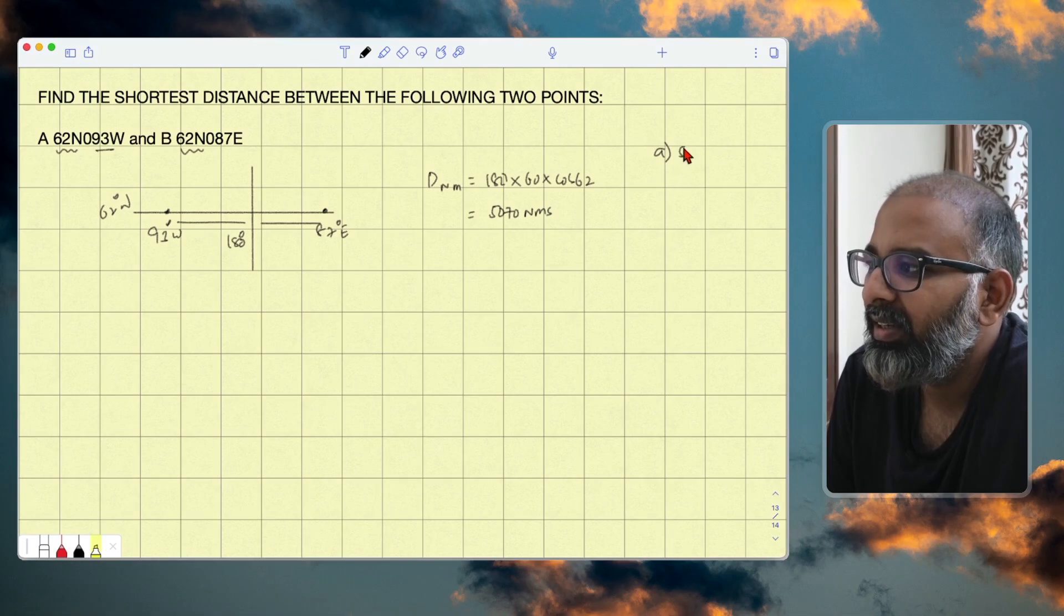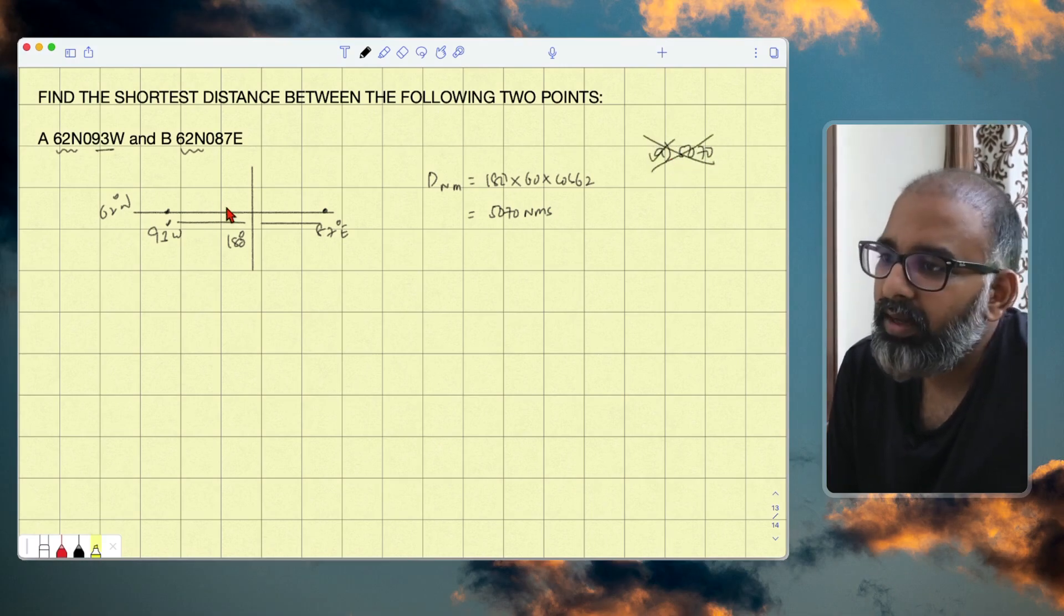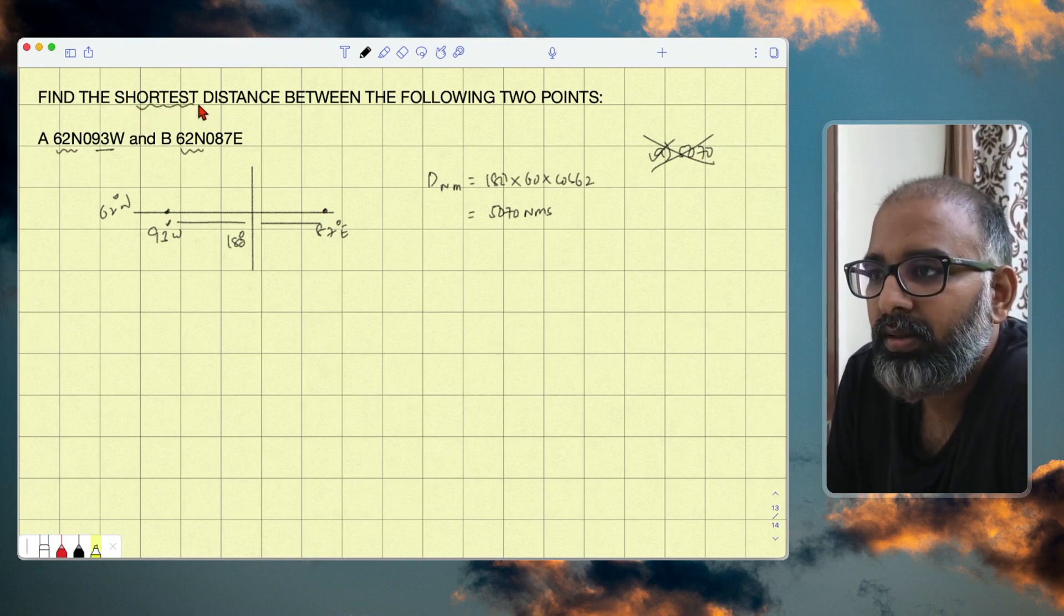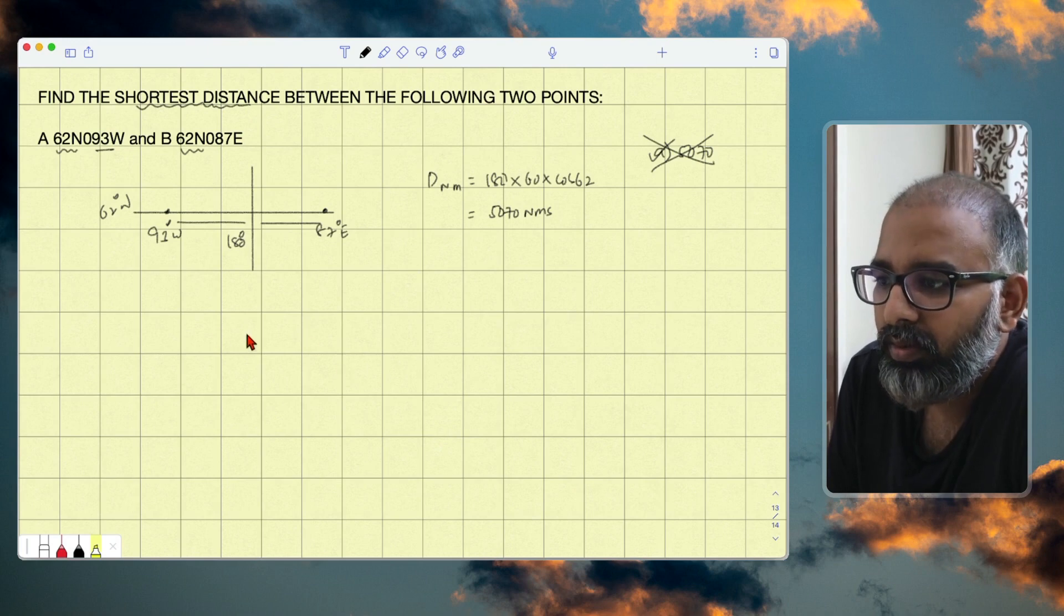And in your answers the first option will be 5070. You will take this and this is a blunder. Why? They have not asked the distance along a parallel of latitude at all, they have asked the shortest distance.